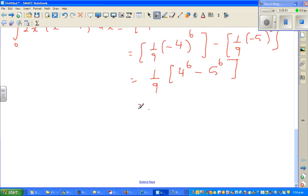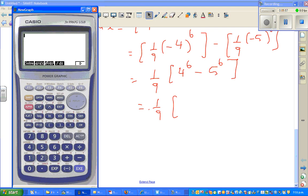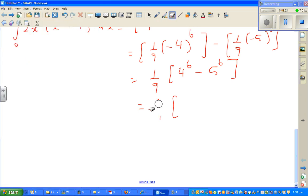So this is nothing but 1/9th times. So let me use a calculator. So I'll do 4 to the power 6 minus 5 to the power 6, which is this number, and then divide by 9, which is minus 1291. So I'll finally write the answer is minus 1281. This minus only tells me that this area between 0 and 1 is under the x-axis.